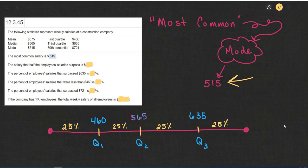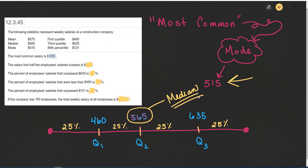So the salary that half of the employees' salaries surpass is the quartile two, which is also the median. The median is the number in the middle, and that's the $565. So that median is where half of the data falls to the right of the median, and half falls to the left of the median.